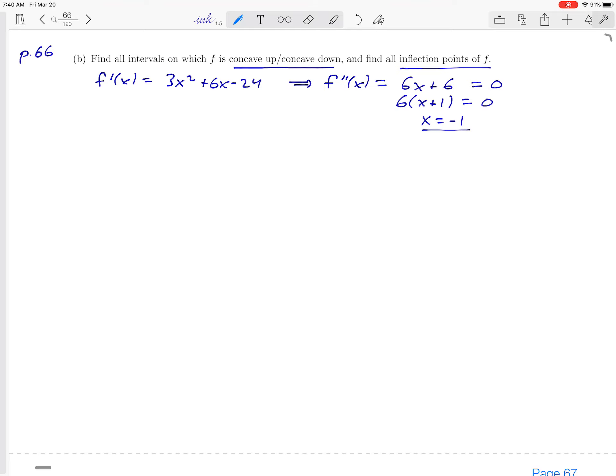...that looks like x = -1. So we really have only one number in our sign chart in this case. We'll make our number line. There's only one place where that second derivative is 0—it's negative 1. We're going to make a sign chart for the second derivative based on that now.